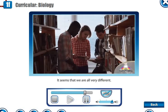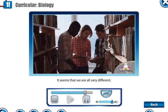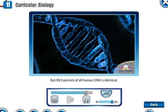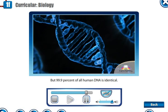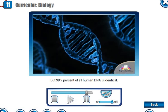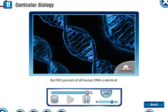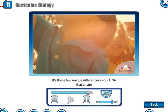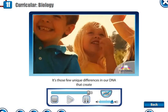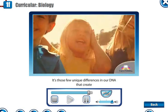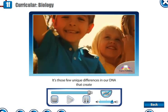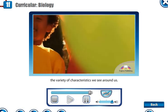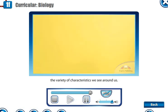It seems that we are all very different, but 99.9% of all human DNA is identical. It's those few unique differences in our DNA that create the variety of characteristics we see around us.